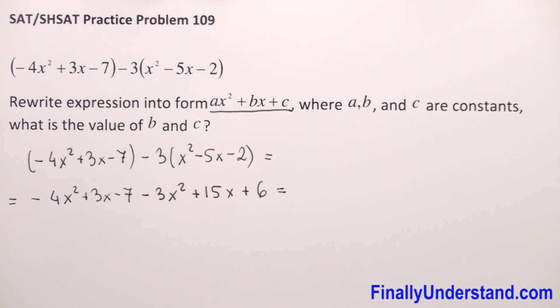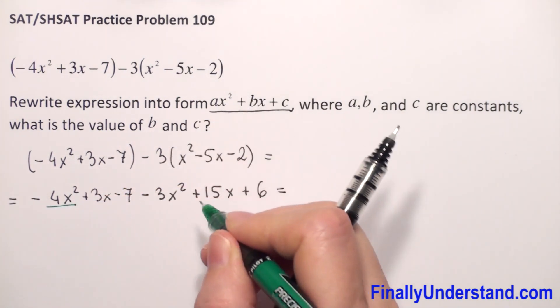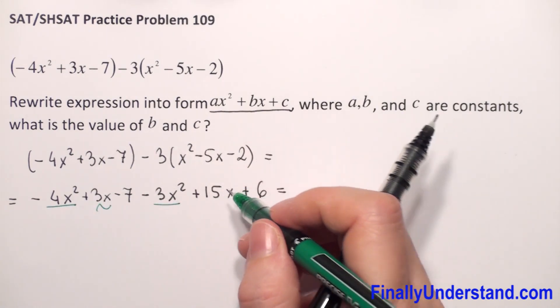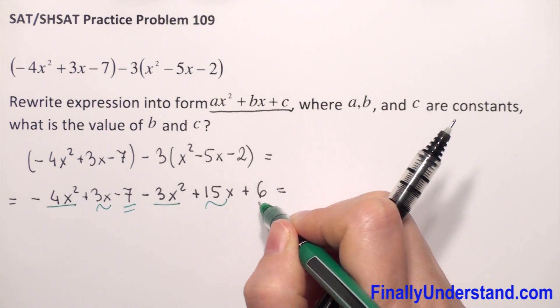So this is equal. Now I have to combine the like terms. We have negative 4x squared and negative 3x squared. We have 3x and 15x, and we have negative 7 and 6.